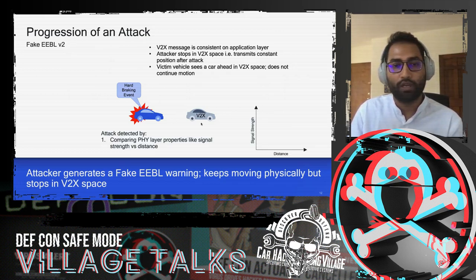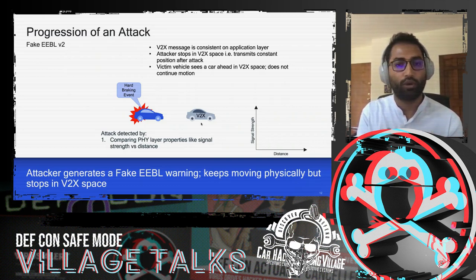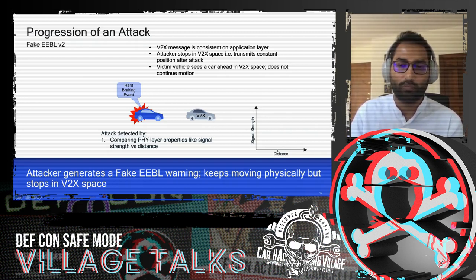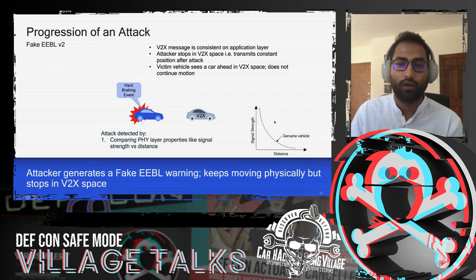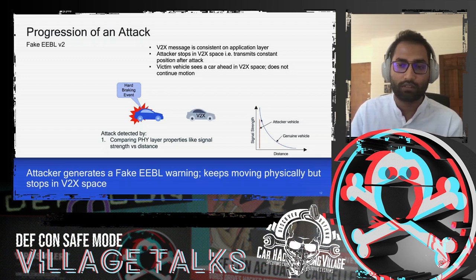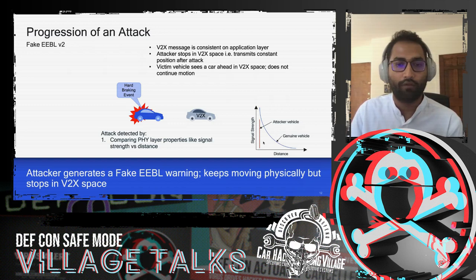To detect version two, we look at physical layer properties — specifically signal strength versus distance. Signal strength should decrease as distance between vehicles increases. But if the attacker sends constant positions while physically moving away, the reported distance stays the same while signal strength keeps reducing. This mismatch — the red line in the graph — reveals the attacker versus a genuine vehicle.